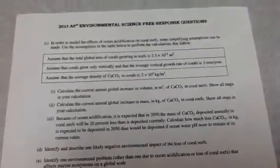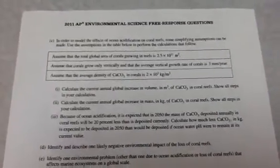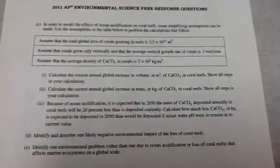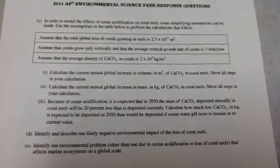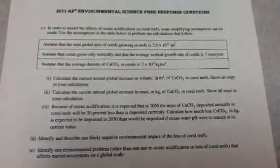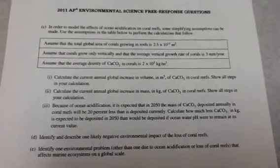It says, in order to model the effects of ocean acidification on coral reefs, some simplifying assumptions can be made. Use the assumptions in the table below to perform calculations. The total area of corals growing in reefs is 2.5 times 10 to the 11th meters squared.